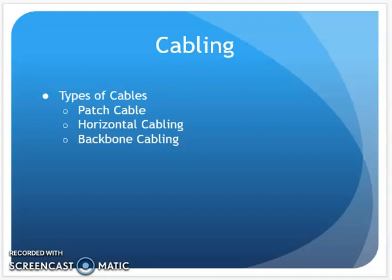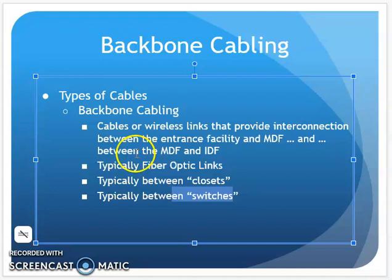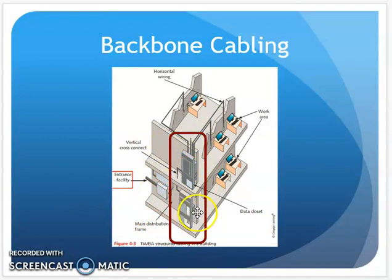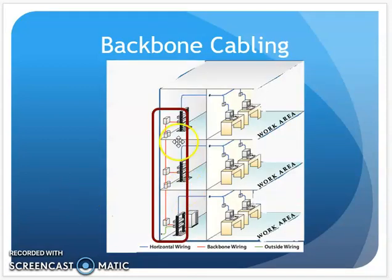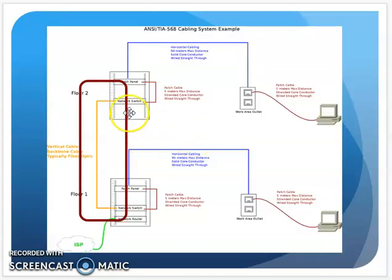The last type of cabling is backbone cabling. Backbone cabling typically goes between closets or between switches and is usually fiber optic — chosen for bandwidth or distance. On a college campus connecting buildings, fiber is used for distance purposes, but also for bandwidth. Even within a building between two closets, it's typically fiber optic mainly for bandwidth. The orange or green wiring shown in the diagrams represents fiber optic backbone connecting switches and closets.